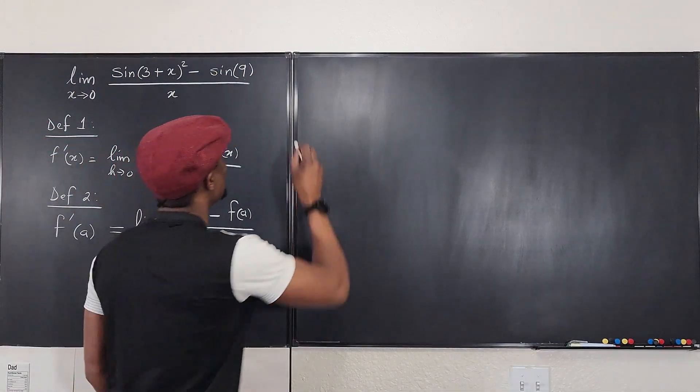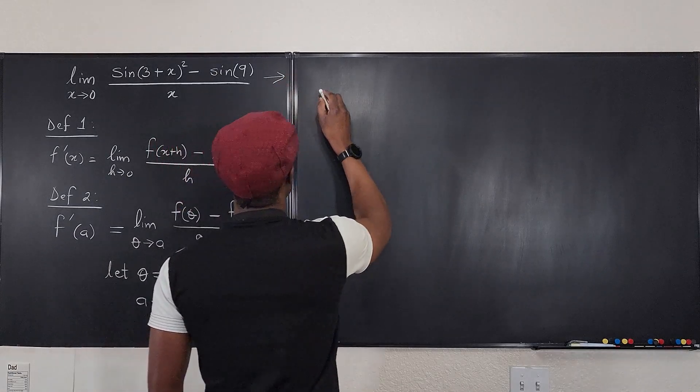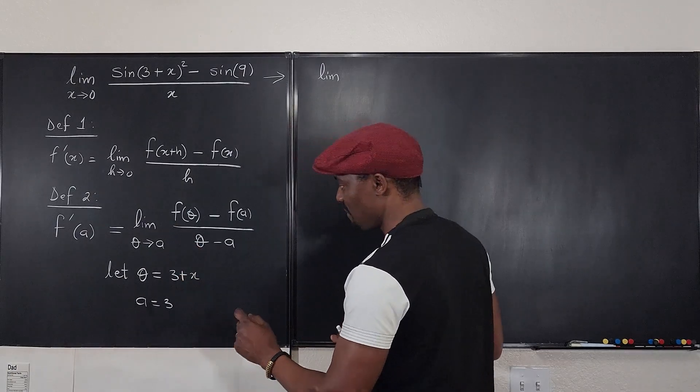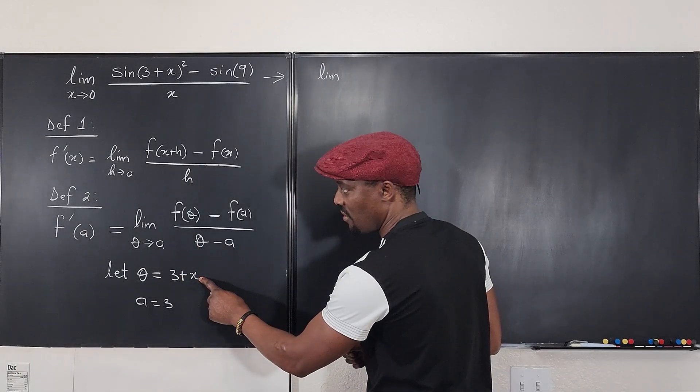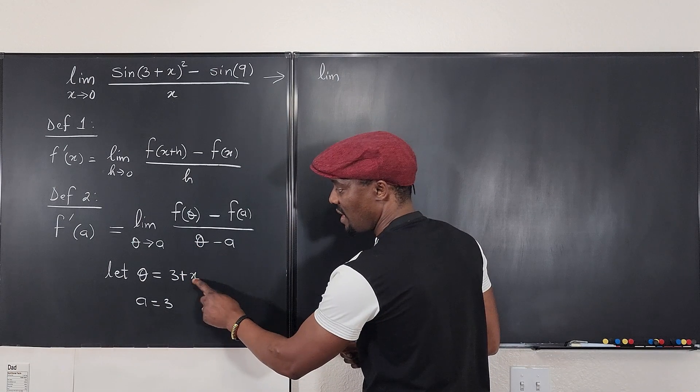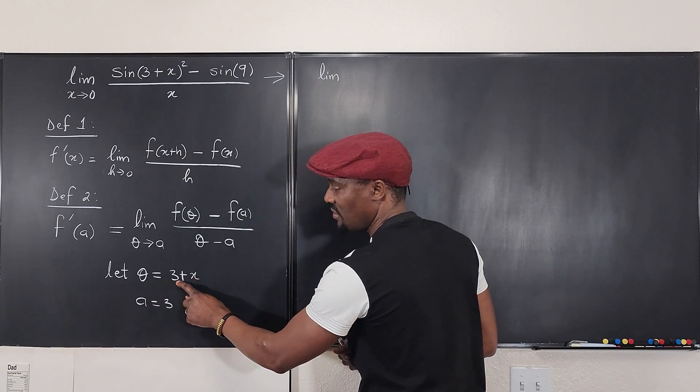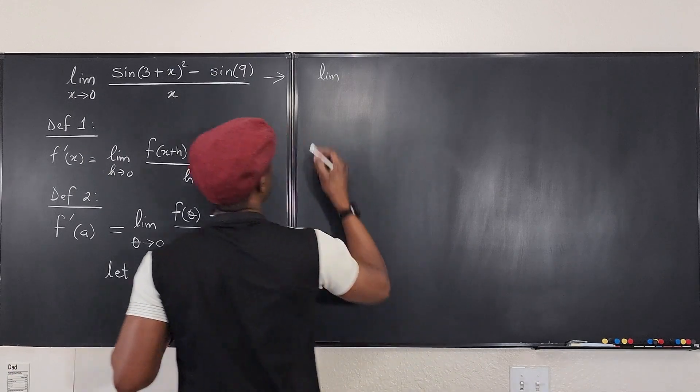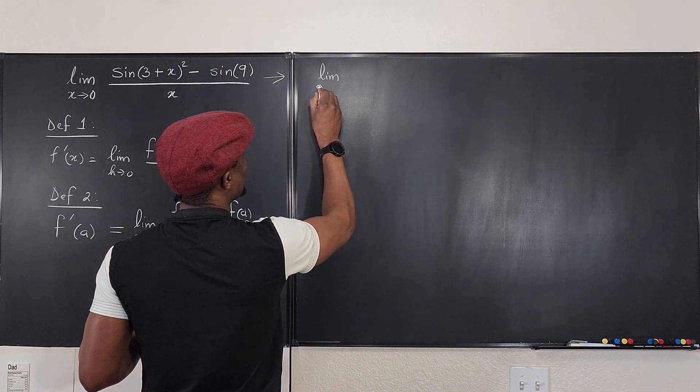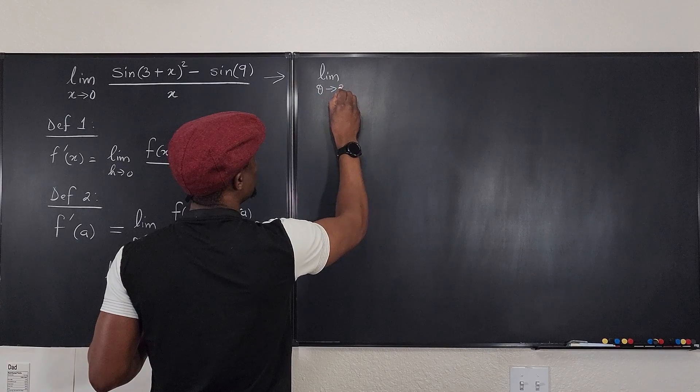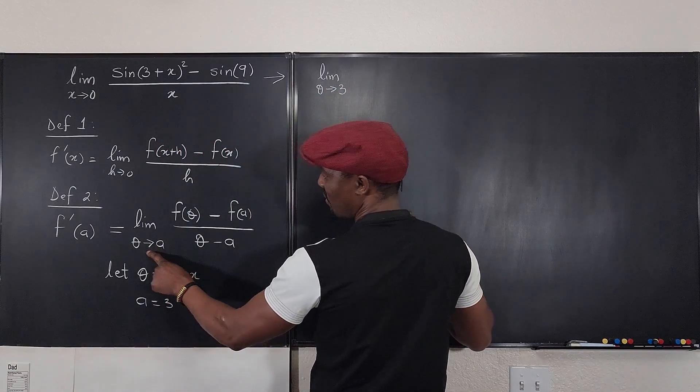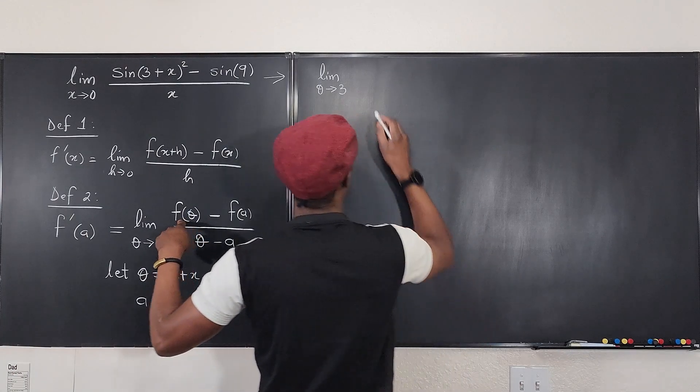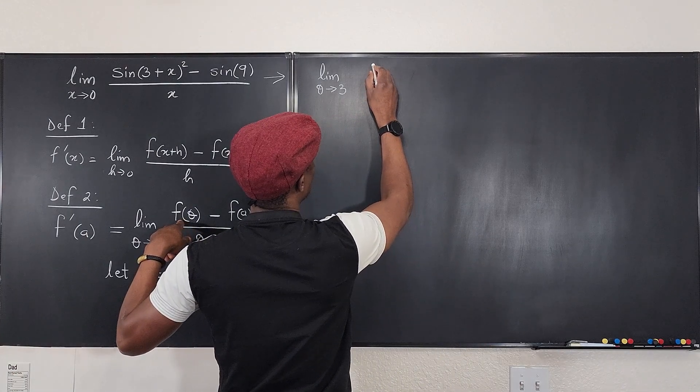this way. This now can be written as the limit. Now watch. As x goes to 0, what do you think is happening? If x approaches 0, then theta approaches 3. Right? So limit as theta approaches 3, which now looks like this. Theta approaches a of f of theta,